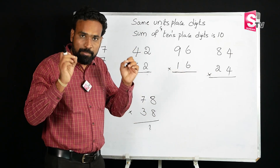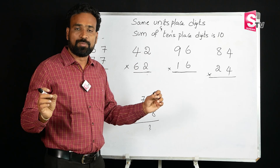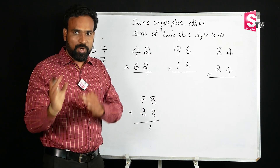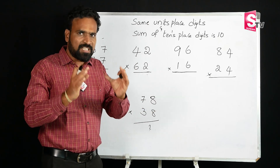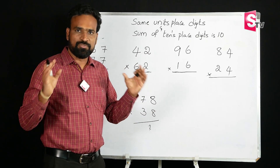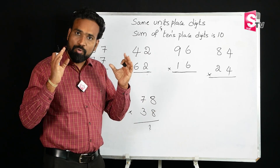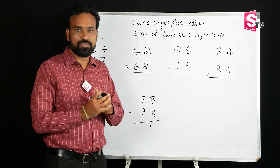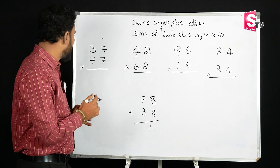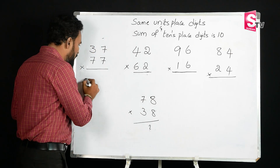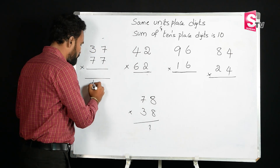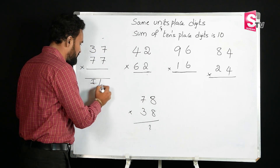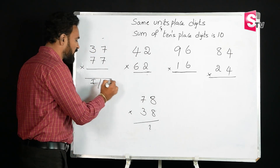We will apply this method for 20 problems. The first problem uses the criss-cross method of multiplication. The answer comes in two parts: the first part and the second part. It is very simple.